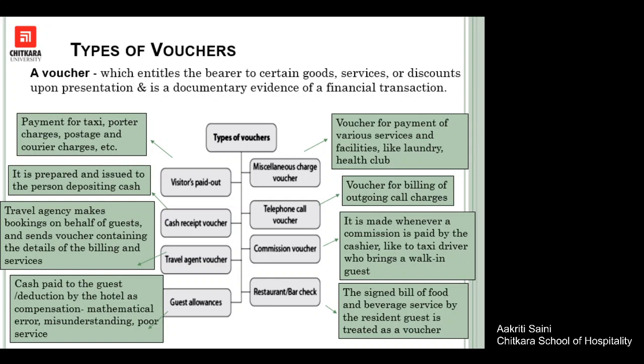A commission voucher is made by the cashier and given to taxi drivers or other people who bring business to the hotel — we give a commission to them because they are generating business for us. Last but not least, if a resident guest avails food or beverage service in the hotel restaurant or bar, a bill is generated which the guest signs, and that amount is posted into the guest's folio. This is known as a restaurant or bar check.